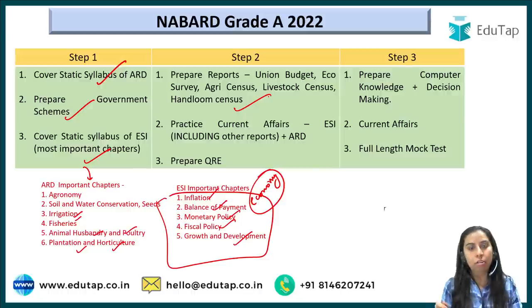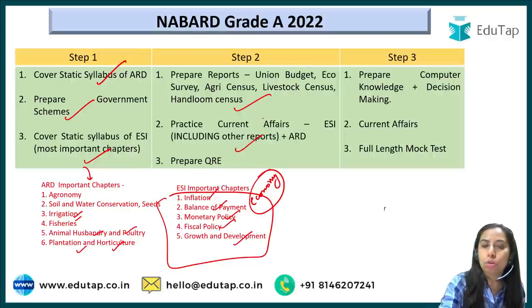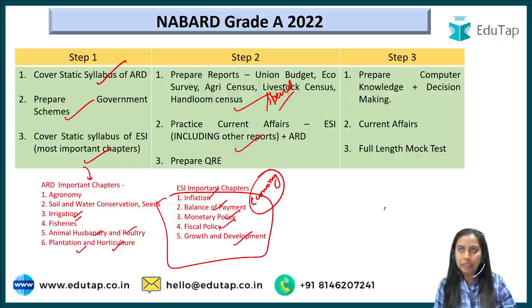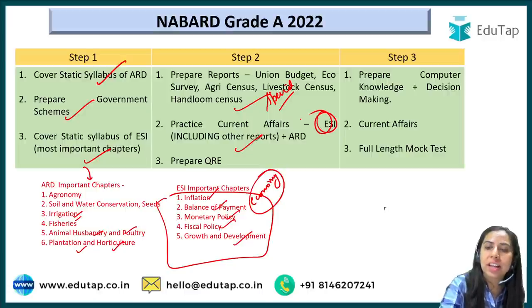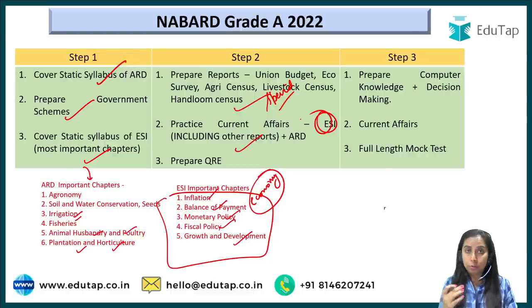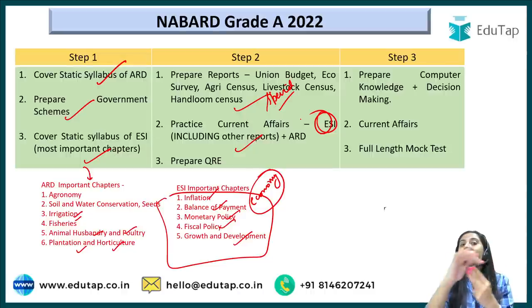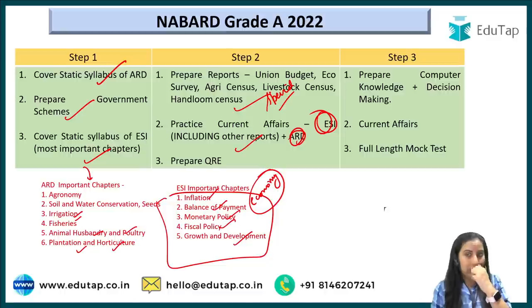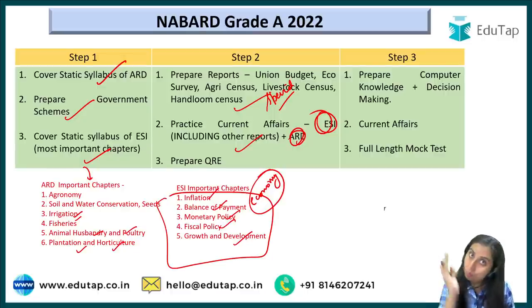Step 2 is reports. Cover these reports, then prepare current affairs which include reports. Special reports include Agri Census, Livestock Census, Handloom Census, Union Budget. Other reports: FAO reports, World Bank's Global Economic Prospects, NITI Aayog SDG India Index — all those are to be covered under ESI current affairs. If you have EduTap's course, there are three documents: monthly reports, monthly schemes, and current affairs. If not, make sure you do not miss report, schemes, and current affairs.